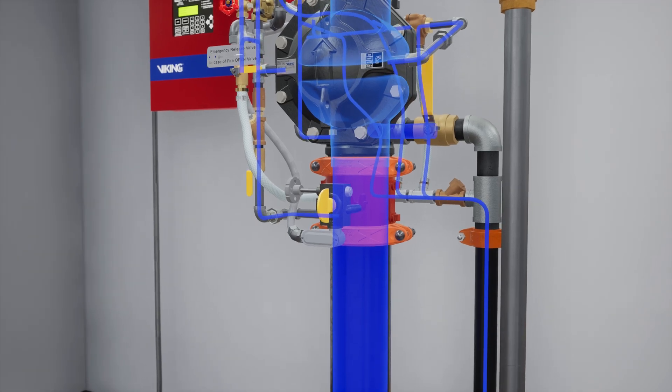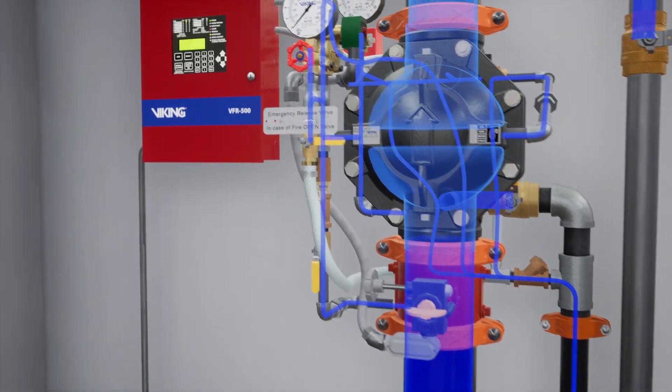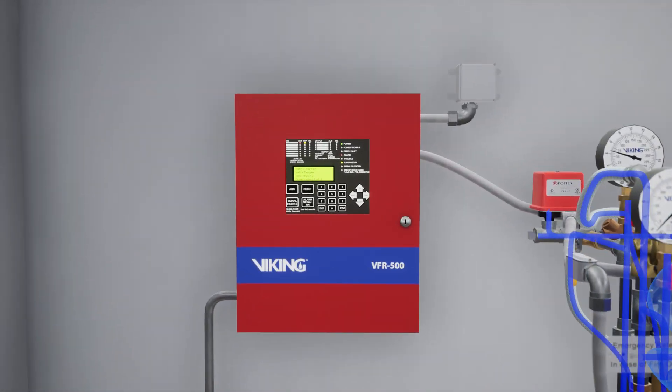Let's start by closing the water supply control valve. While this isn't required, we are going to silence the alarm panel. Press the silence button on the VFR 500 release control panel.